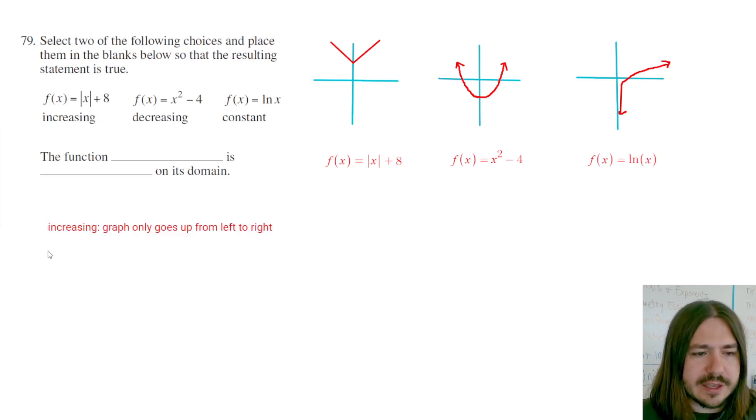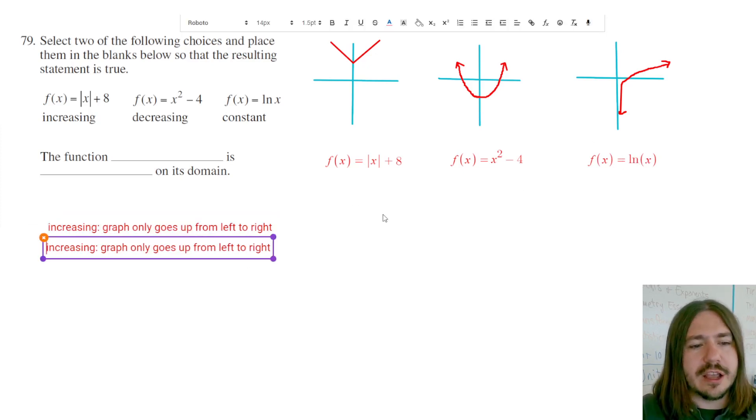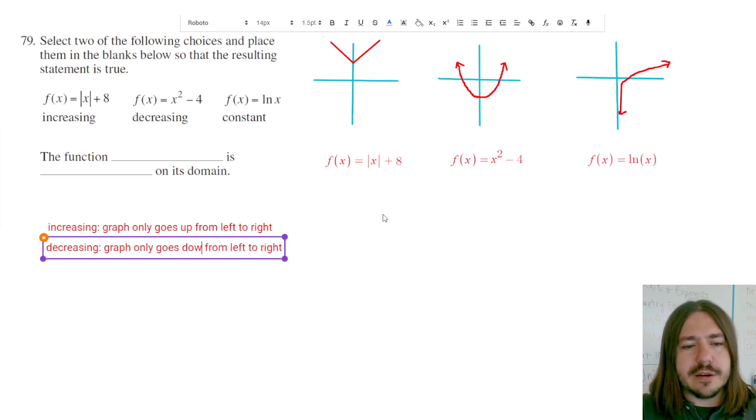But yeah, decreasing would mean that it goes down from left to right. And we do see on these first two graphs where it goes down and then comes back up. So there's an interval where it's decreasing and then it starts increasing. Same thing for the quadratic. It's decreasing and then increasing.